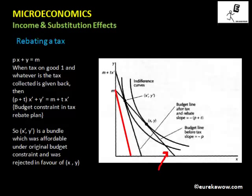The government is rebating the tax. The tax revenue collected is T times X dash, where X dash, Y dash is the final consumption bundle. The consumer pays T times X dash to the government, and the government gives this back to the consumer, so the consumer's money income increases from M by TX dash. When the government taxes and rebates, the budget constraint becomes: (P plus T)X dash plus Y dash equals M plus TX dash. This is the budget constraint under the tax rebate plan.